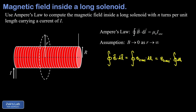We get B_circ times the path integral of dl around this closed circle of radius r, which is just the circumference 2πr. On the right-hand side of Ampere's law we have μ₀ I_enclosed, and the current enclosed by this loop is zero — no current penetrates the surface defined by the loop because it's parallel to all the turns of the solenoid. Dividing both sides by 2πr, we find that the circumferential component of the magnetic field must be zero.